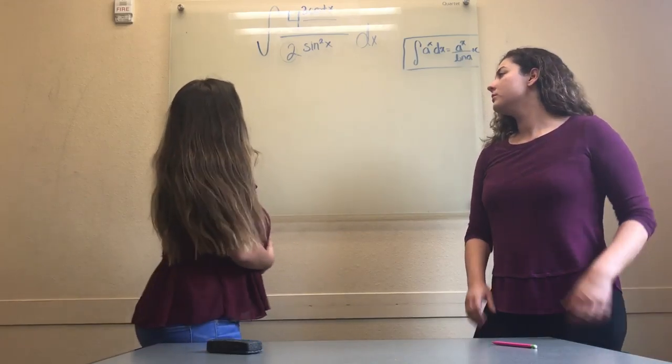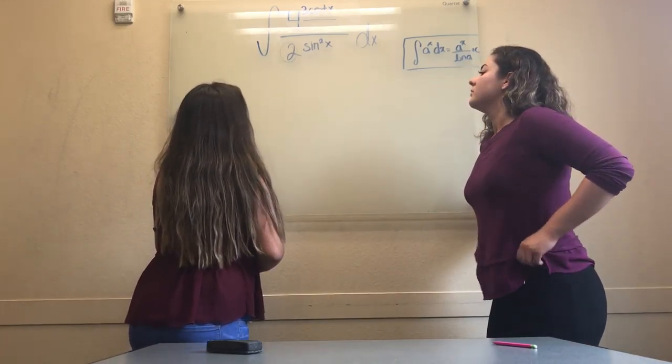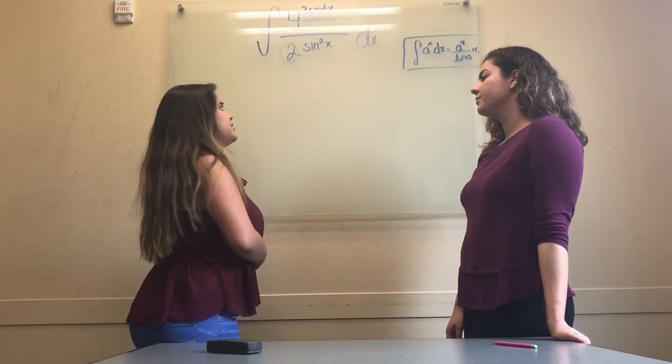For our first problem we received, find the antiderivative of 4 raised to 3 cotangent x over 2 sin squared x dx.